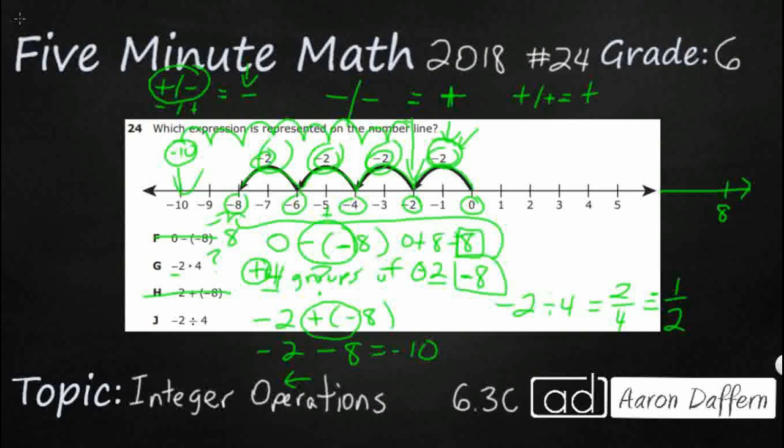So our answer is going to be G because we have 4 groups of negative 2 and that equals negative 8.